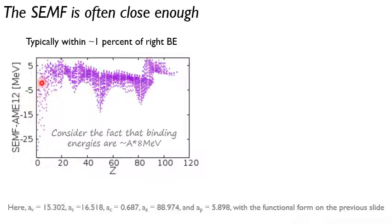And that might sound kind of big, but keep in mind that the binding energies are roughly the mass number times 8 MeV. And so you're talking about several hundred MeV or even up to a GeV of binding.